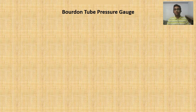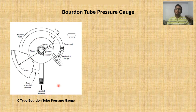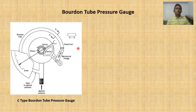Another important instrument is the Bourdon tube pressure gauge, which plays a vital role in pressure measurement and can measure from very low to very high pressure. This is a C-type Bourdon tube pressure gauge with a calibrated scale. When pressure is applied, the Bourdon tube — which has an elliptical cross section — tries to straighten and become circular. Through a mechanical linkage, the sector rotates, which in turn rotates the pinion, and the pinion rotates the pointer to give a direct pressure reading.